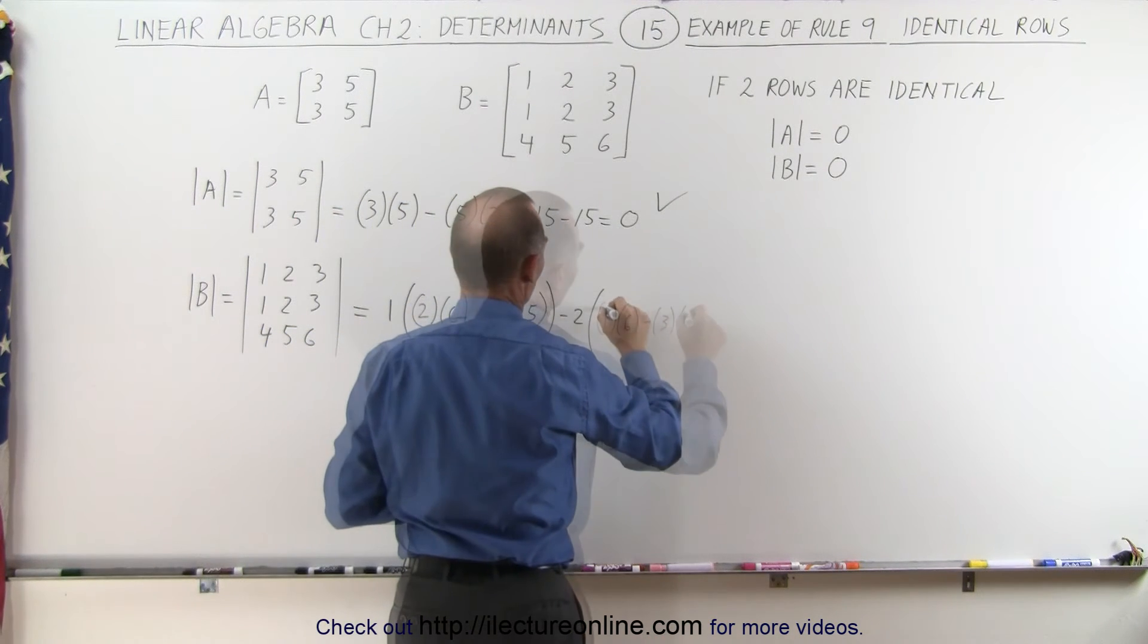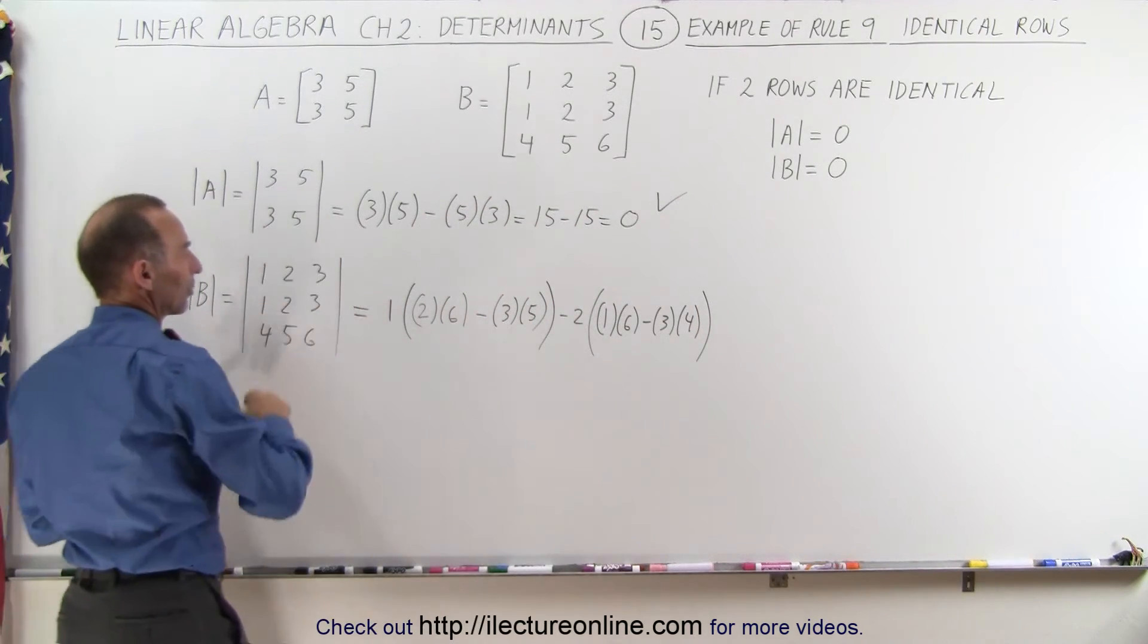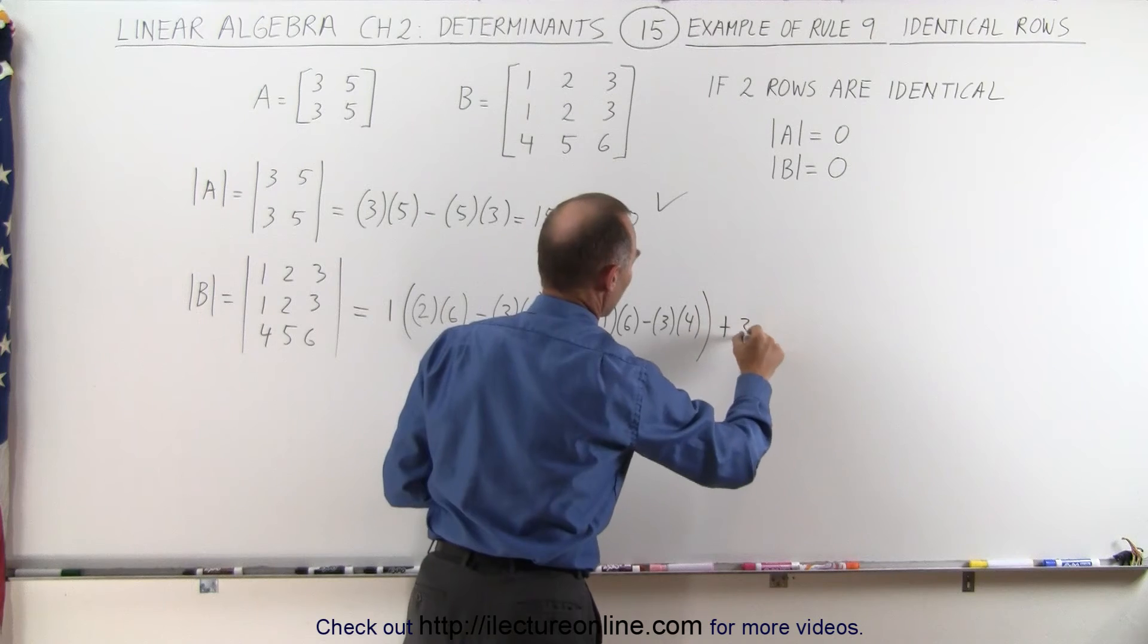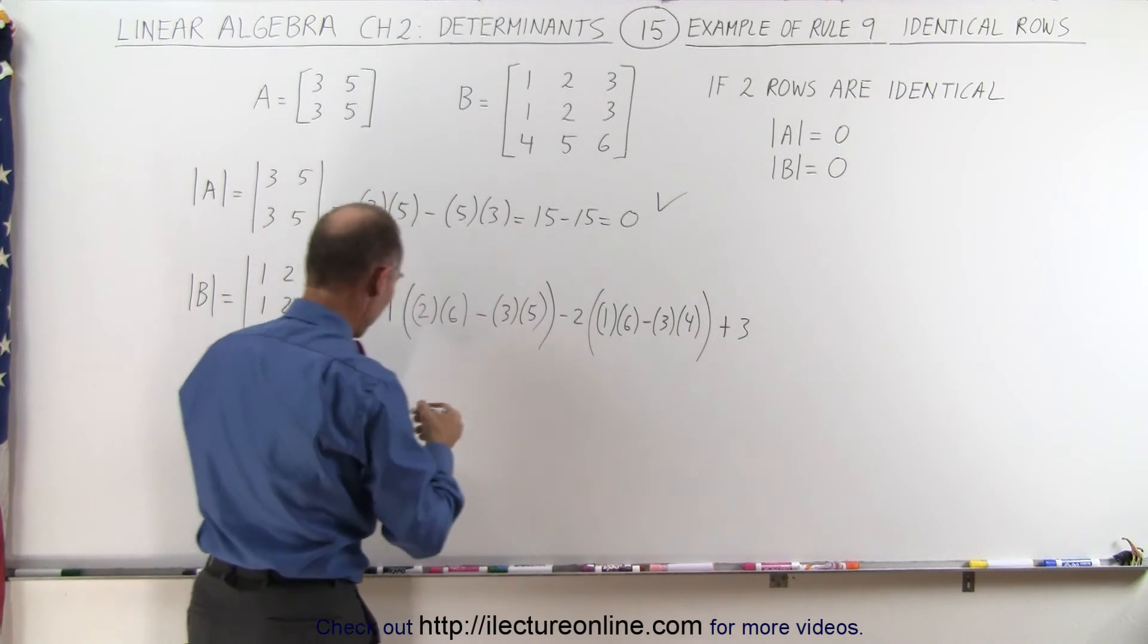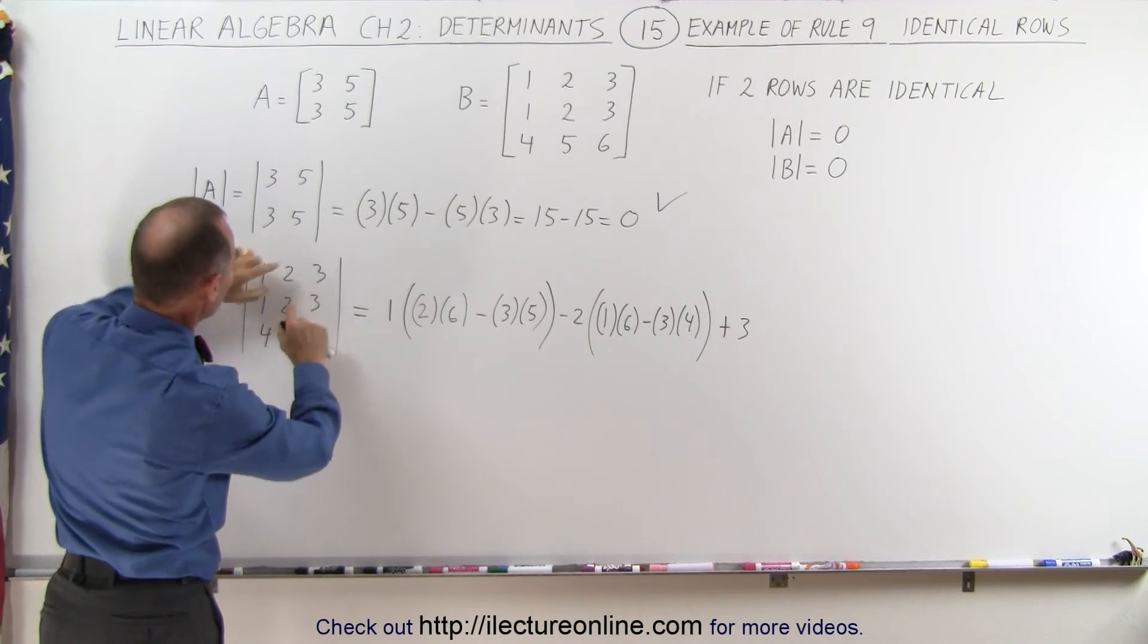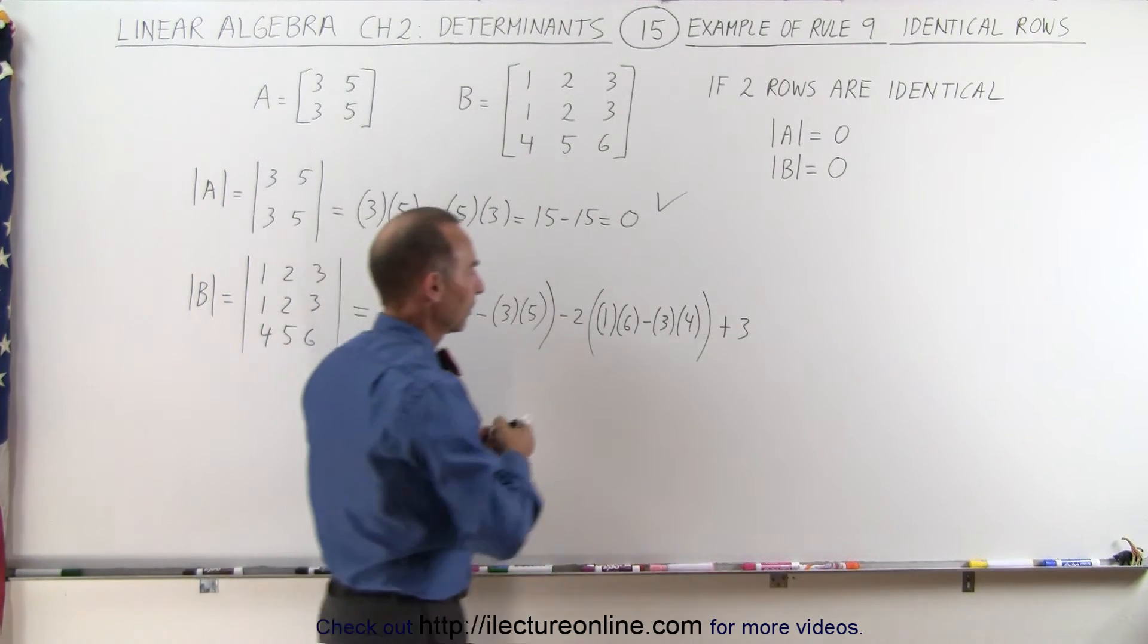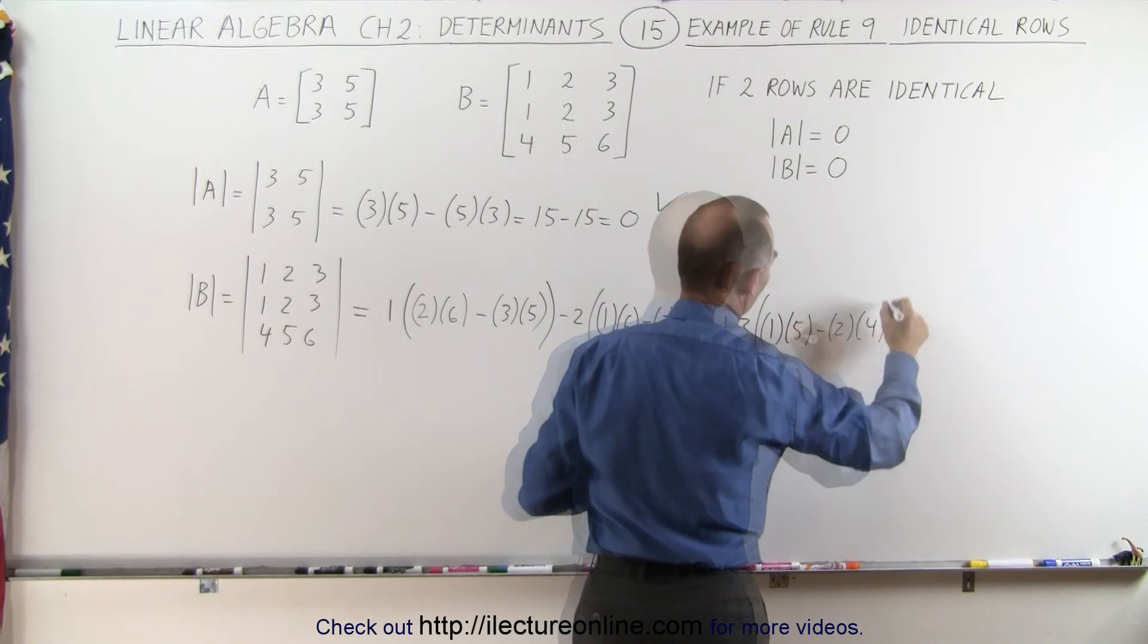Then we have the final element up there, 3. So plus 3 - it's plus minus plus, it alternates. Then you get rid of this row and this column, you have these four elements left, so it's 1 times 5 minus 2 times 4.